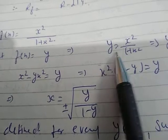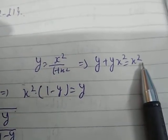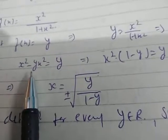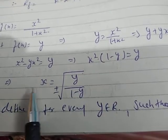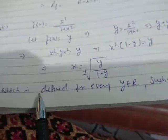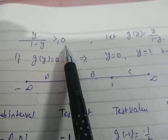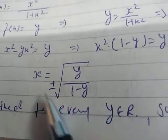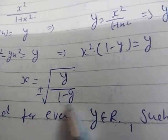Let f(x) = y. So y = x²/(1+x²). It implies y + yx² = x², then x² - yx² = y. Taking x² common: x²(1-y) = y, so x = ±√(y/(1-y)). This is defined for every y in R such that y/(1-y) ≥ 0.